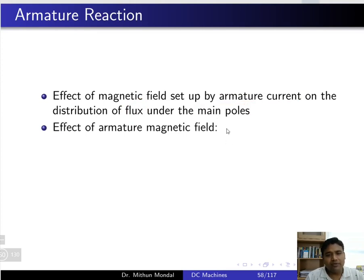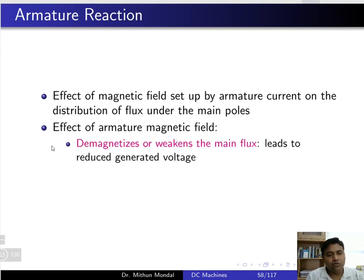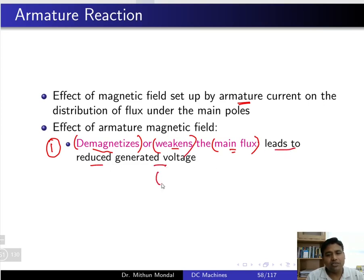What are the effects of armature reaction? There are two effects. The first effect is it will demagnetize or weaken the main flux. Since the main flux is produced by the main poles, the flux produced due to armature current will demagnetize or weaken the main flux. This will lead to reduced generated voltage — EG, whatever should be generated, will be less due to this demagnetizing property.